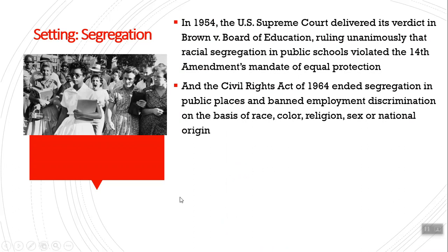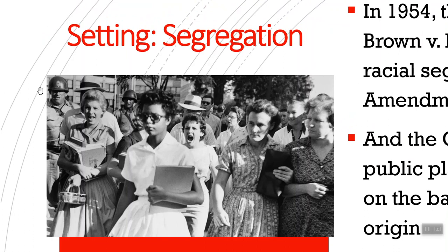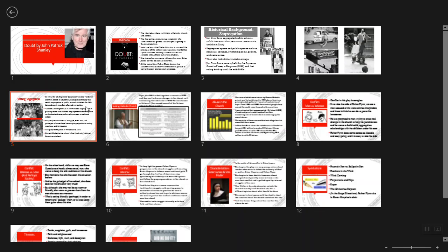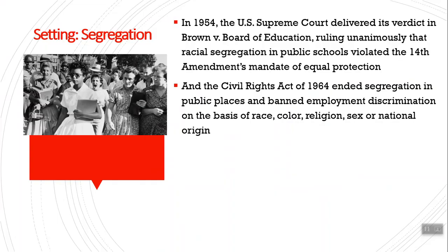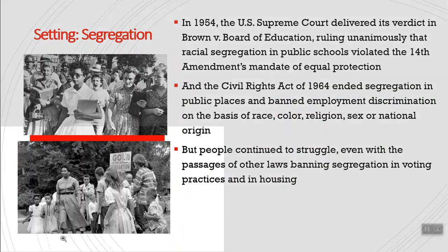The Civil Rights Act of 1964 effectively — or on paper at least — ended segregation in public places and banned employment discrimination. However, the struggle still continued. You can see a young woman attempting to go to school for the first time after this ruling, with other women glaring at her and shouting, and armed guards there to finally enforce the integration. Later there were also laws banning segregation in voting practices and housing.